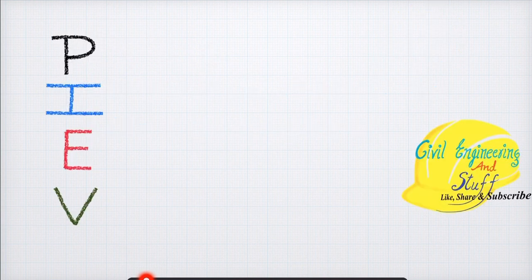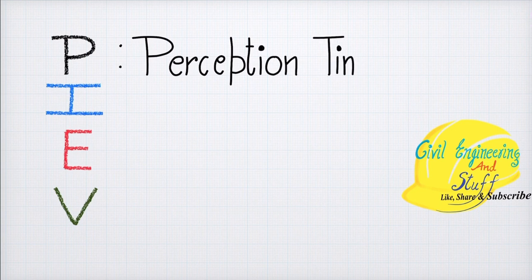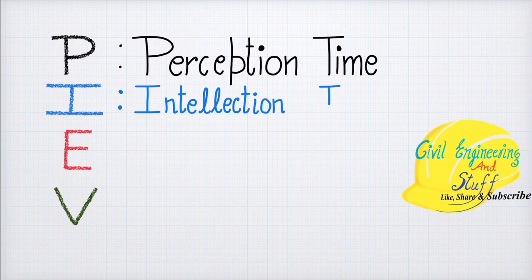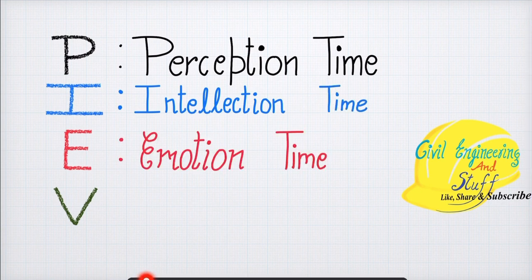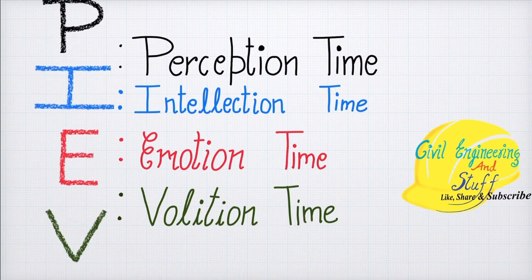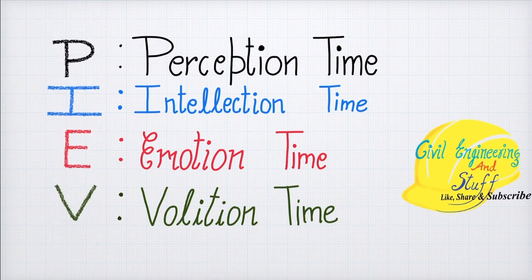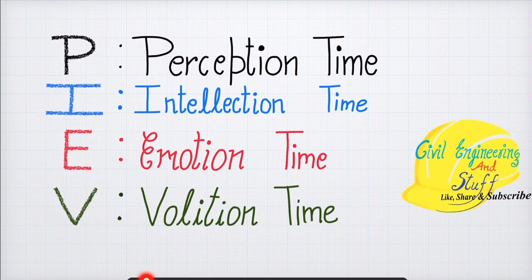P means Perception time, I means Intellectual time, E means Emotion time, and V means Volition time — together forming the PIEV theory.